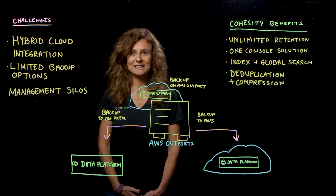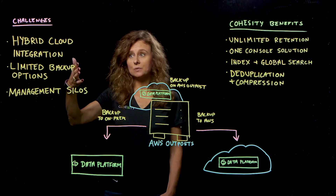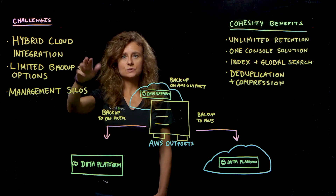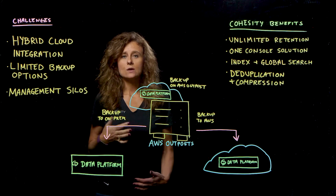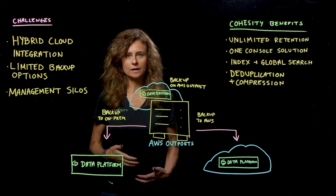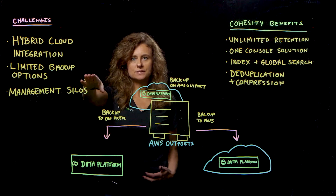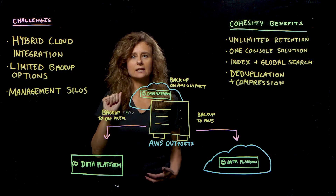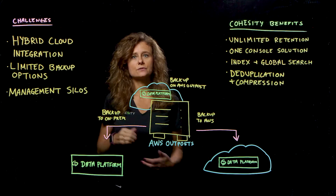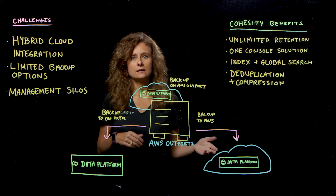So let's take a look at the challenges. From my experiences there are several enterprise challenges that are top of mind. One, many of you are on a cloud-first journey, and with that journey that introduces the hybrid cloud integration consideration — what that might mean as you implement cloud workloads into your already solidified on-prem deployments. What you're probably finding is that you have limited backup options when you specifically are looking at AWS Outposts. If you've integrated and deployed that into your environment, you also now have different management silos — whether it's on-prem, AWS Outposts, or even in AWS cloud.